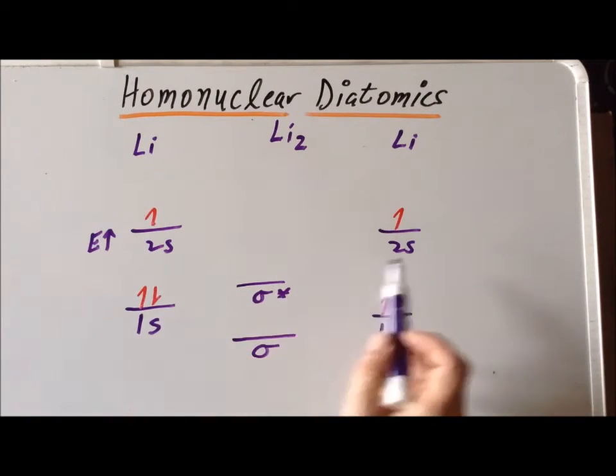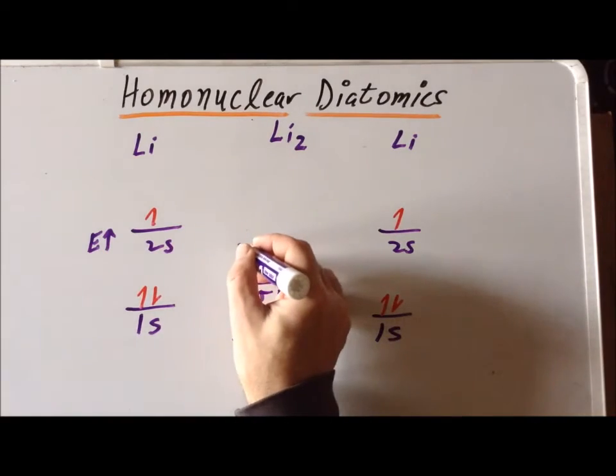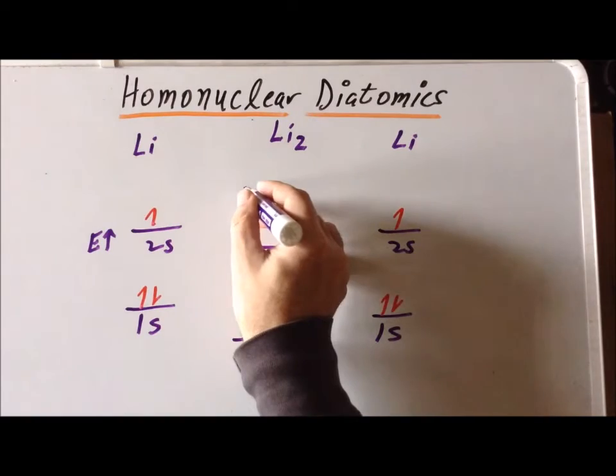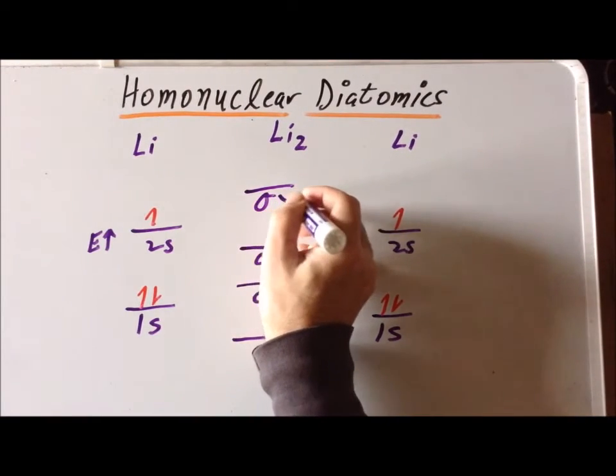Similarly, with 2s orbitals, they have the same symmetry as 1s, and we end up with a lower energy bonding combination, which we call sigma, and a higher energy antibonding combination, which we call sigma star.